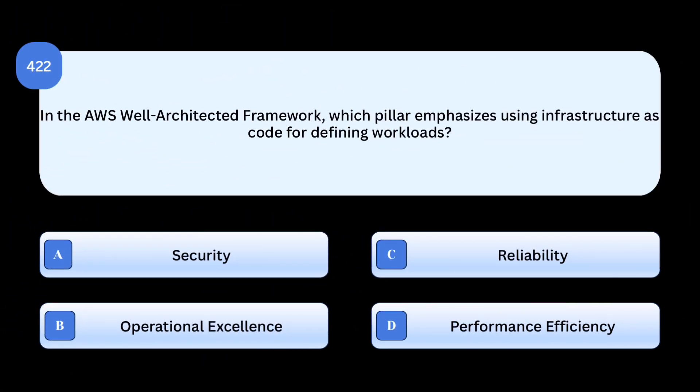In the AWS Well-Architected Framework, which pillar emphasizes using infrastructure as code for defining workloads?